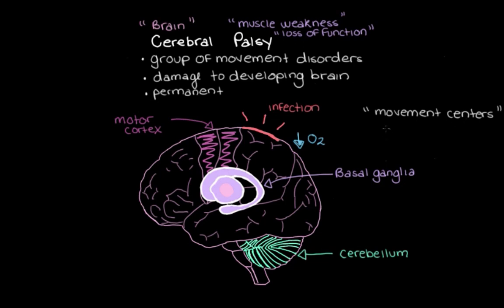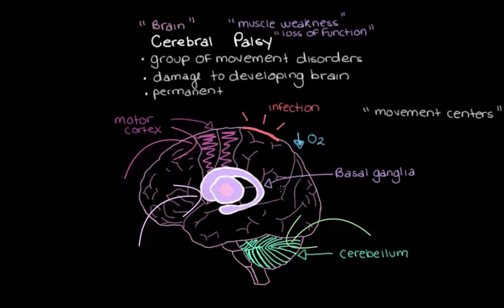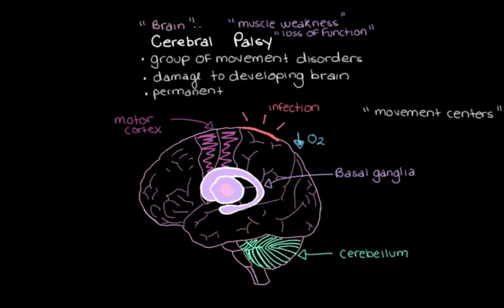It follows that when these movement centers themselves, or the tracks of neurons that they use to communicate with each other and with our muscles, are damaged during development, the person will develop problems with their movements. And that's what we call cerebral palsy.